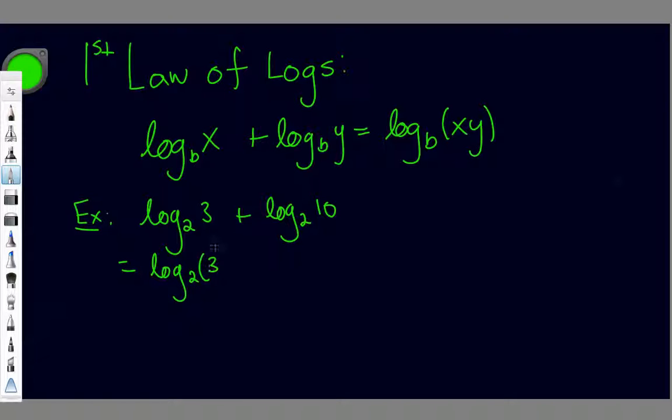and I take what's inside the first one, and then I multiply by what's inside the second one. So, I get 3 times 10. So, I end up with log 2 of 30. Really, guys, it doesn't get much easier than using that. It's pretty straightforward.